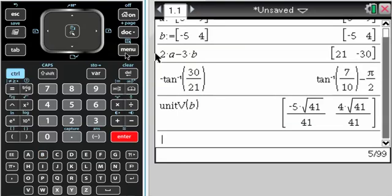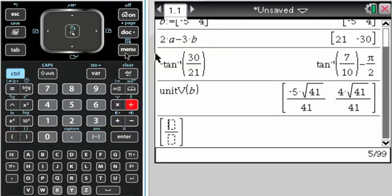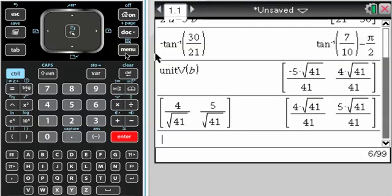I think one of the vectors that I'm looking for is going to be, really I'm just kind of swapping these. So 4 over the square root of 41 and -5 over the square root of 41. And then what you want to do is change the sign of one of them, which hopefully you have figured out the reason for that at this point.